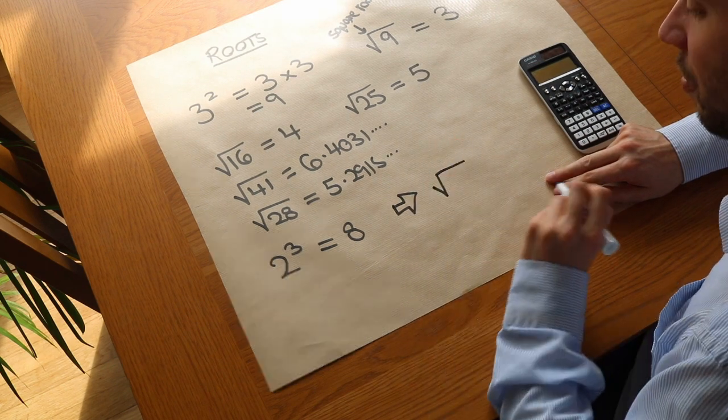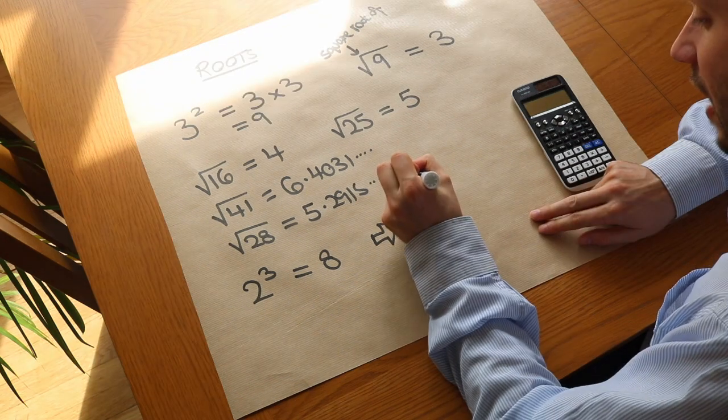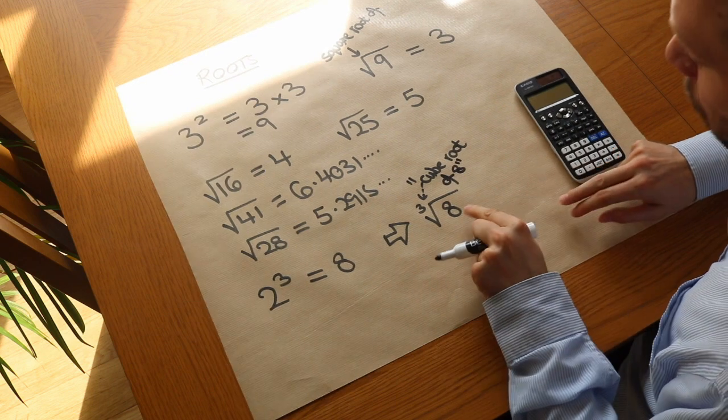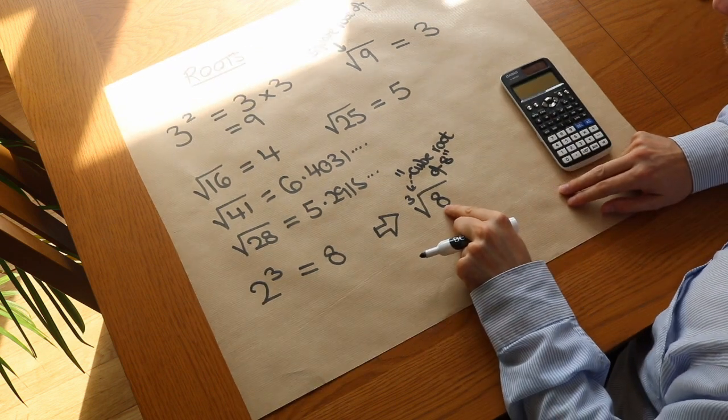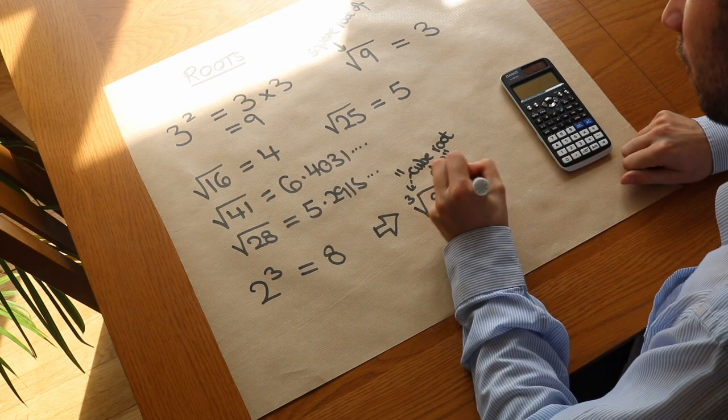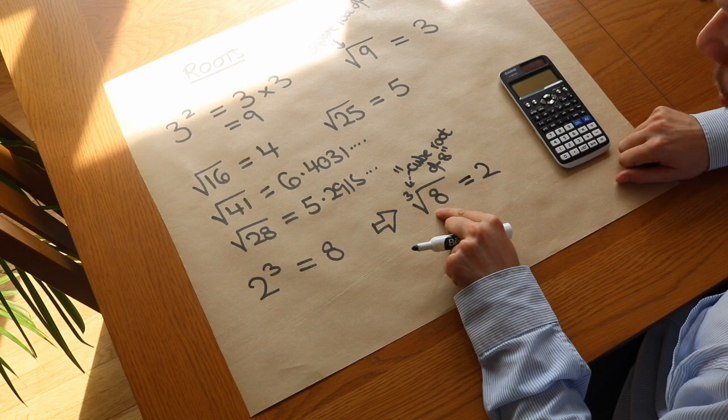We have the same symbol as before, but we put a little 3 there. So we say that as the cube root of 8. It means what number cubed would give you 8, so what times itself times itself would give you 8? That number is 2, because 2 cubed is 8. So the cube root of 8 is 2.